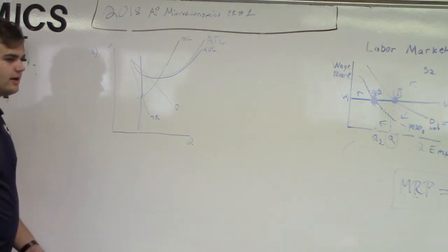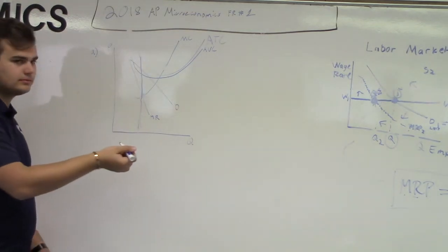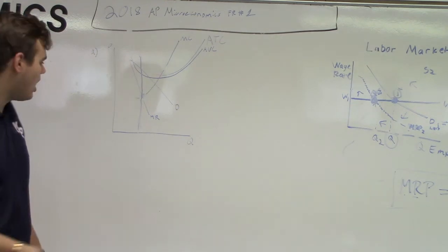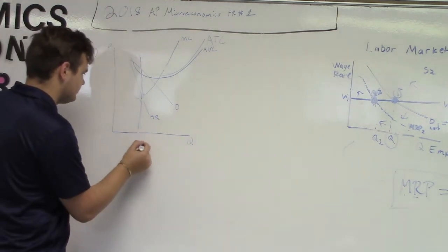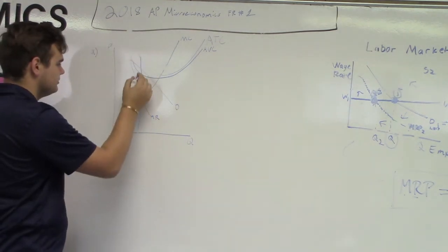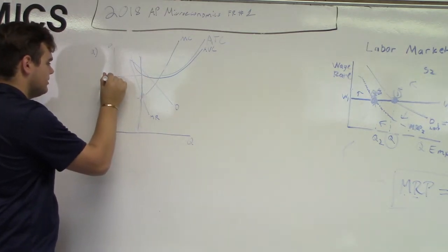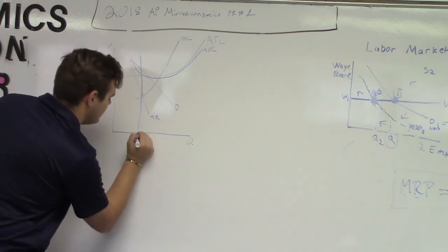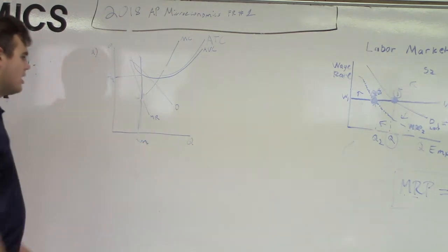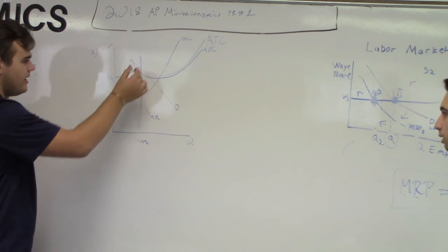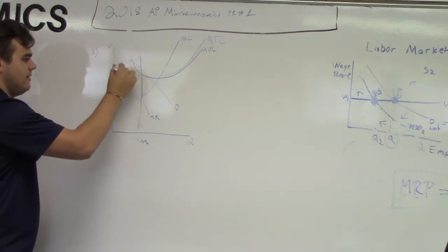To show the negative economic profit. Before we do that, they want you to label the quantity QM and the price PM. Beautiful. PM and QM. Very good.